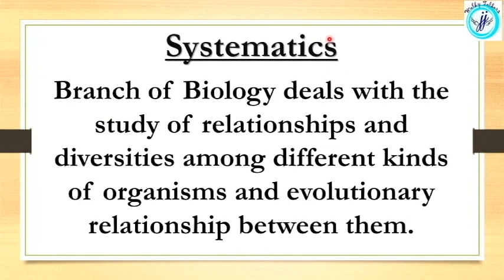The next topic is called Systematics. It is a branch of biology that studies the diversity of organisms and their evolutionary relationships. Taxonomy is a smaller branch within systematics. Systematics is a wide branch of study in biology.